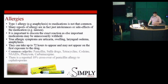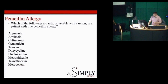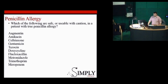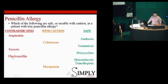We treat anaphylaxis with adrenaline. In terms of antibiotics and penicillin allergy: Augmentin contains amoxicillin — not safe. Tazocin contains piperacillin — not safe. Flucloxacillin — not safe. These all contain penicillins. Ceftriaxone and meropenem are beta-lactam-based antibiotics, so there is some crossover, but if clinically indicated they can be used with caution. Amikacin, gentamicin, doxycycline, metronidazole, and trimethoprim are safe to give to a patient with a penicillin allergy.